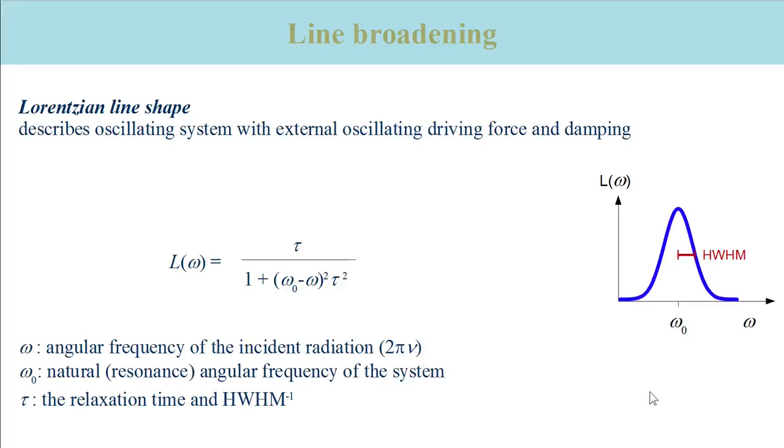In spectroscopy, tau describes the lifetime of an excited state. Tau in the Lorentzian line shape function determines how broad this function is.